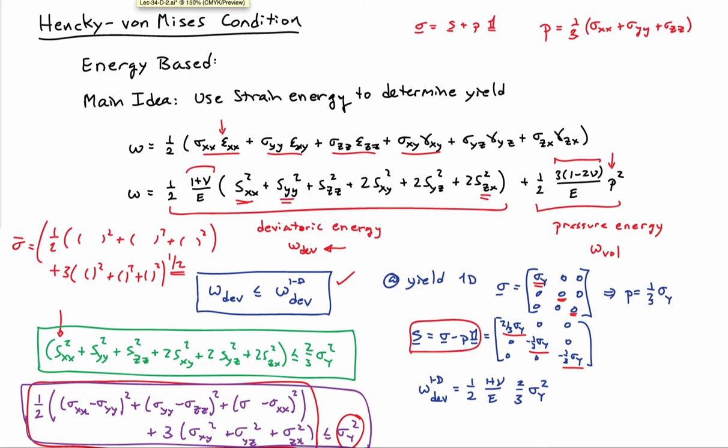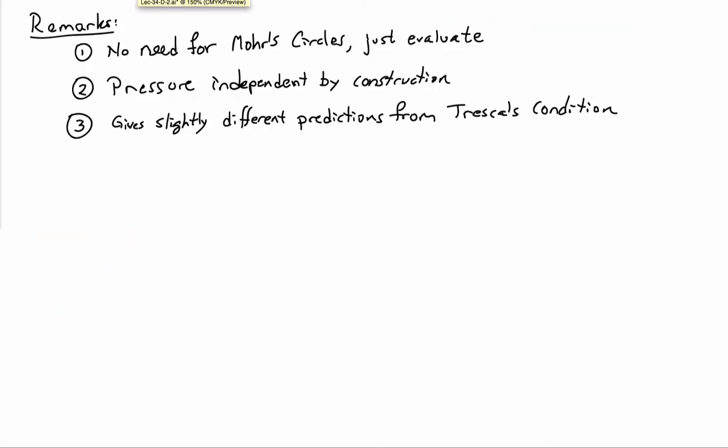Now, there are a couple important remarks here about the von Mises or the Hencky-von Mises condition. Number one is that there's no need to draw a Mohr circle. So all you have to do is evaluate. You take the state of stress, whatever it happens to be, sigma_xx, sigma_yy, et cetera, and you just evaluate it. And so that's a lot easier than doing the Mohr circle, finding eigenvalues, and things of that nature.